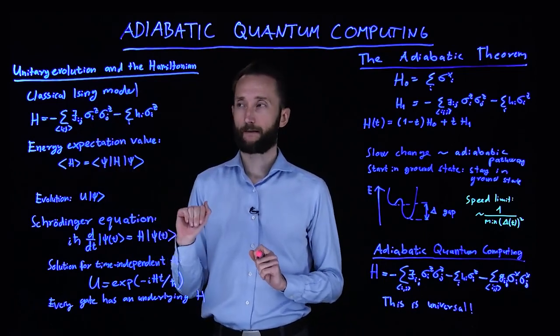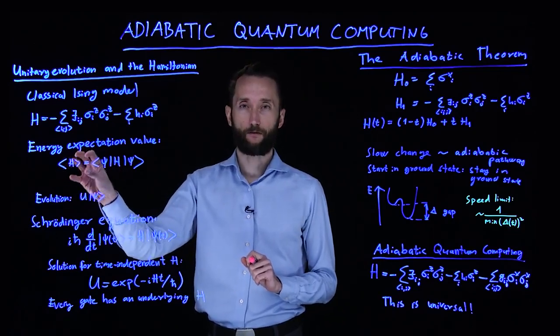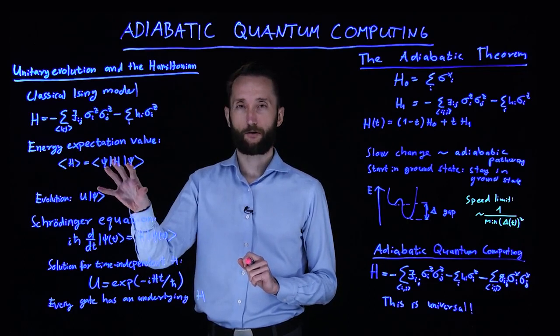Let's go back to our classical Ising model for the quantum mechanical description, where we have the sigma z operators acting. This was the energy of the system. It was the expectation value of the Hamiltonian in a particular quantum state.